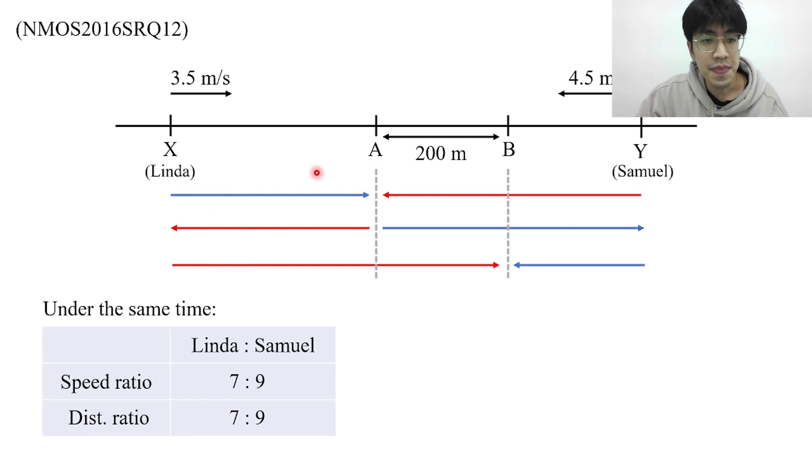Therefore we know that the ratio between this path and this path over here would be 7 to 9. I'll call them 7u and 9u, u for units. If this distance is 7u then this will also be 7u and this will be 9u. And then this one will be 7u, this one will be 200 and this one will be 9u minus 200 because this entire path will be 9u. Now with all these distances our next job would be to find out what is u.